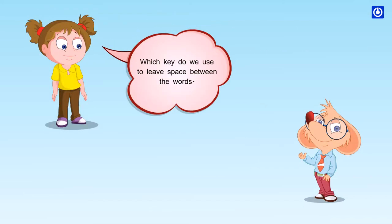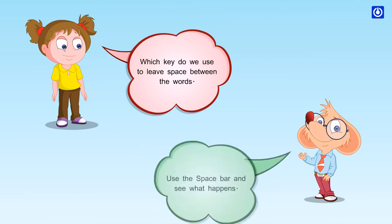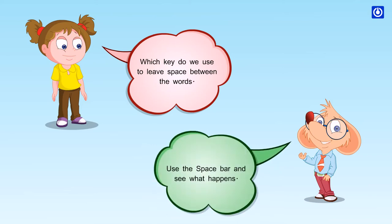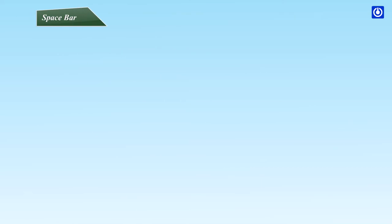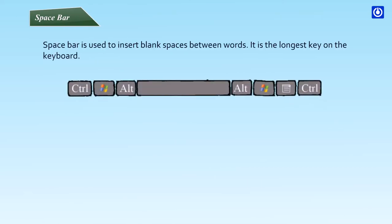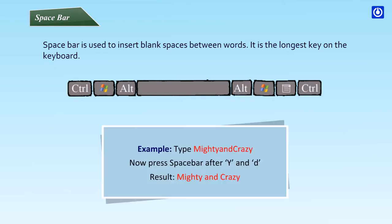Which key do we use to leave space between the words? Use the space bar and see what happens. Space bar: the space bar is used to insert blank spaces between words. It is the longest key on the keyboard. For example, type 'mighty' and 'crazy' — now press the space bar after the Y and D.